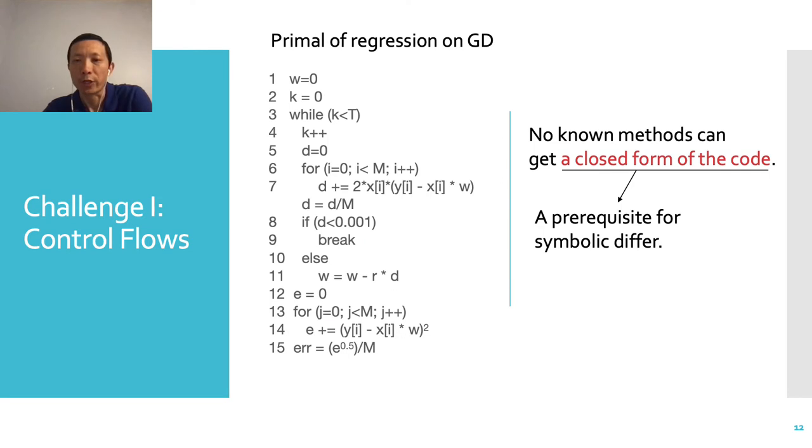The first challenge is control flows. For a simple program like this one, it is already difficult to get a closed form of the calculation of variable error, because of the loops, if-else, and break. To our best knowledge, no solutions exist that can create a closed form for this example.